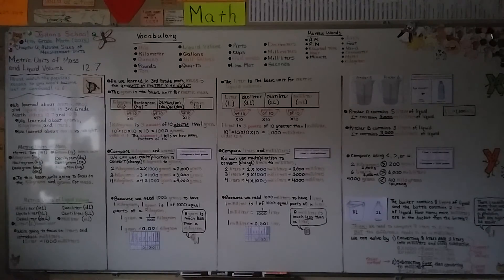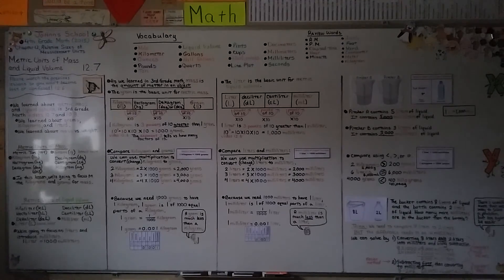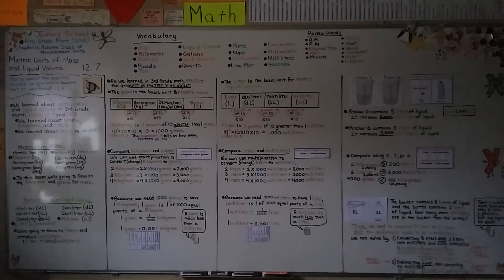I'm sorry the video is so dark — it's stormy outside and turning on a light would reflect off the board. Remember to convert your measures so you're comparing milliliters to milliliters or grams to grams, and it's best to convert to the smaller units. In the next lesson, 12.8, we'll compare units of time like days to weeks, and seconds, minutes, hours.